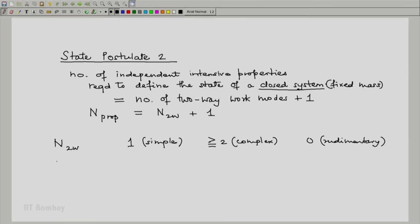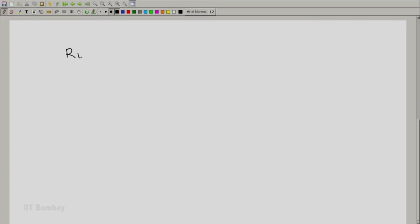By State Postulate 2, the number of properties required would be 2 for a simple system, 3 or greater for a complex system, and exactly 1 for a rudimentary system.